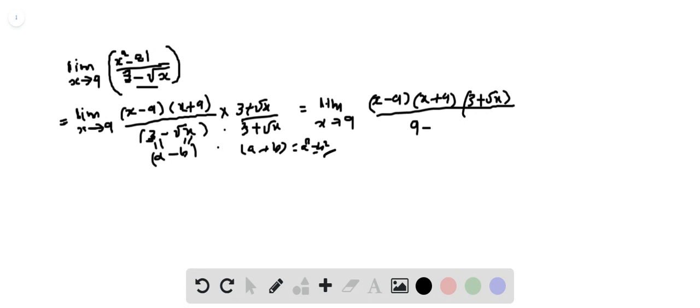So root x whole squared is x. Now if you simplify this you will get the limit as x approaches 9.